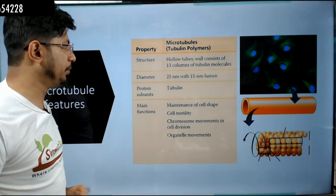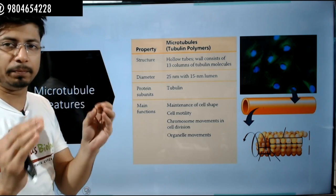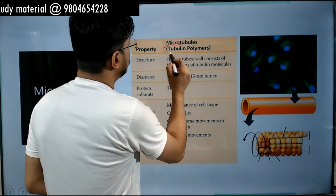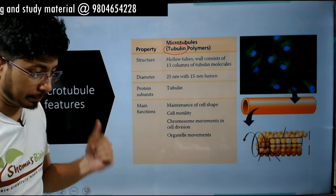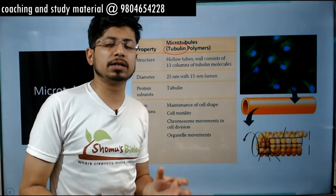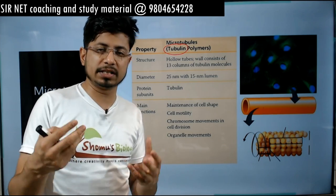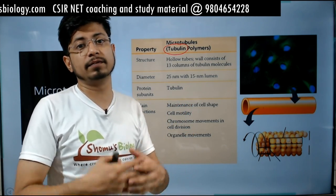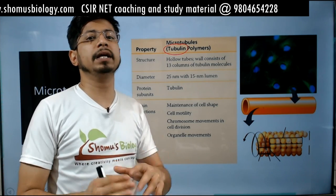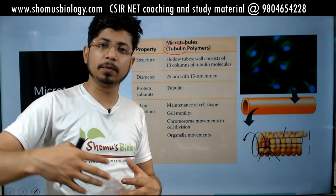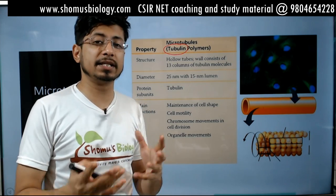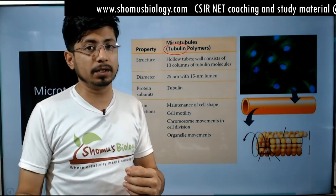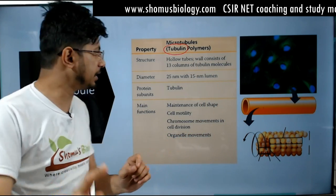Let us first discuss the summary of important properties of microtubules. Microtubules are made up of the protein tubulin. In eukaryotes they are made up with tubulin. In case of prokaryotes, we also see structures resembling microtubules. For example, in eukaryotes we have sperm flagella; similarly, in prokaryotes some bacteria also possess flagella. But bacterial flagella is made up with the protein known as flagellin, while in eukaryotes the flagella of sperm is made up with tubulin.